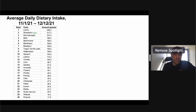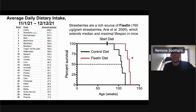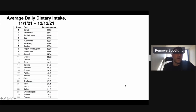Strawberries are second on my list. One reason is they're a rich source of fisetin, which extends median and maximal lifespan in mice. Looking at percent survival against age, we can see an increase in median lifespan in fisetin-treated mice compared with the control diet, and also an increase in maximal lifespan.